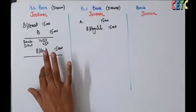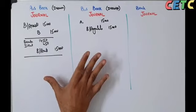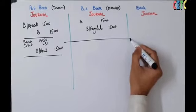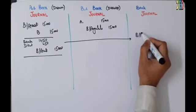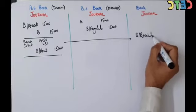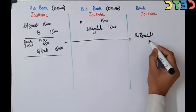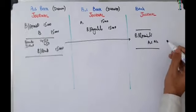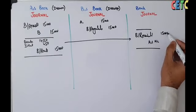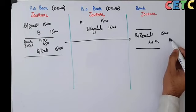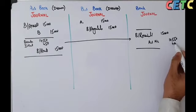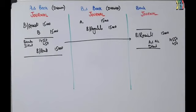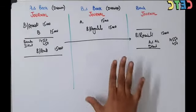Bank के पास bill आ जाएगा तो bank अपनी book में entry pass करेगा। Bank की book में Bills Receivable debit ₹15,000 होगा। A के account को credit देगा ₹14,550 से, और ₹450 जो है वो bank की income होगी — जिसे Discount Income कहेंगे — उसे credit करेगा।